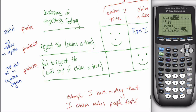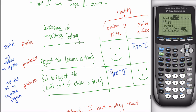It might not surprise you that if we incorrectly fail to reject the null hypothesis — so this is where the claim is true, where the drug really does make you faster, and the statistician says we can't say that it's true — that's called a type 2 error. A type 1 error is when you incorrectly reject the null hypothesis. A type 2 error is when you incorrectly fail to reject the null hypothesis.